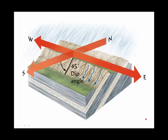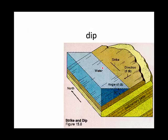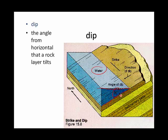Here we have a tilted rock layer dipping at 45 degrees. A very easy way to remember what the dip is is to imagine that it's raining out and that water is dripping down the rock. The direction in which water is dripping is the dip, and the dip is measured from a horizontal surface. The angle from that horizontal surface and the tilting rock layers is 30 degrees. So, the dip is the angle from the horizontal that a rock layer tilts.